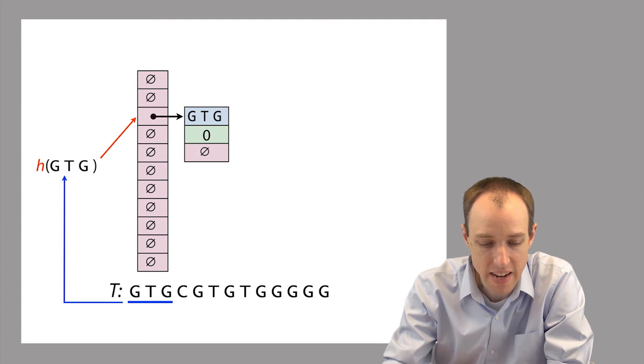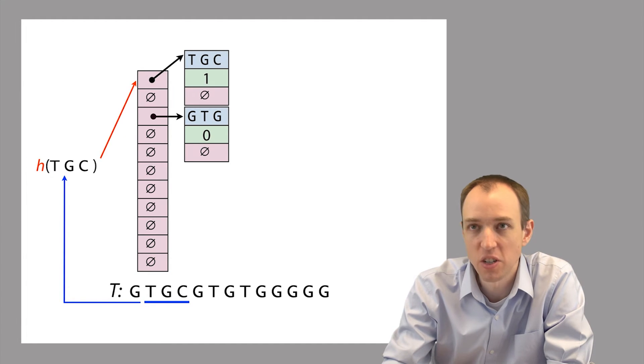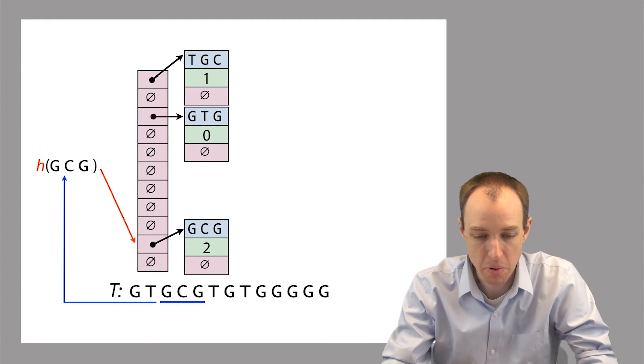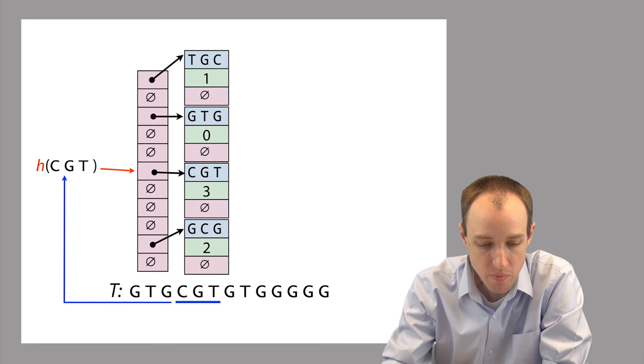So now let's add the second 3mer. So say the hash function assigns it to the top bucket. And so we append the corresponding entry to that bucket like this. And then let's do the third 3mer. And let's say the hash function assigns it to that bucket indicated with the red arrow. So we append the element to that bucket. For the fourth 3mer, we do the same thing.